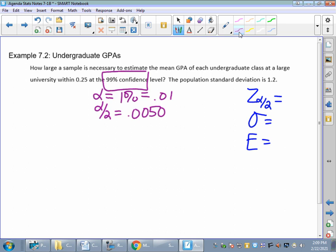When I search on the 0.0050, or inside the table for 0.0050, I am in between two values. I'm in between 2.57 and 2.58. I'm going to go up to the 2.58. And I'm just using a positive value here. Remember, it's symmetric. Negative 2.58, positive 2.58.